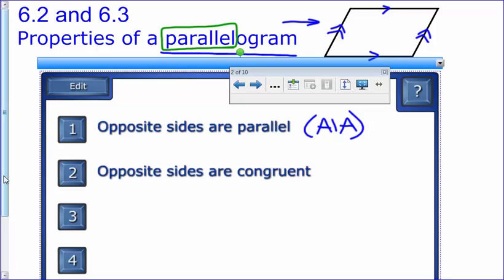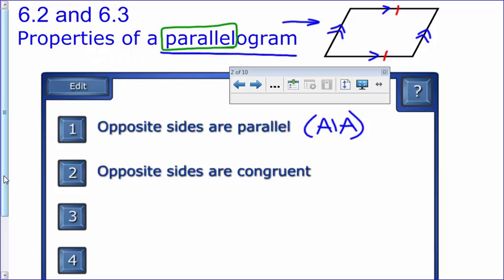Our second property is that opposite sides are also congruent. So they are parallel, but they are also equal. So I'm going to mark with our little dashes.